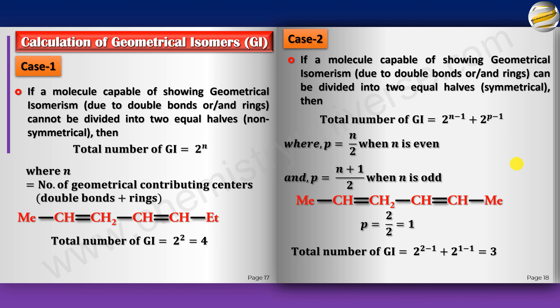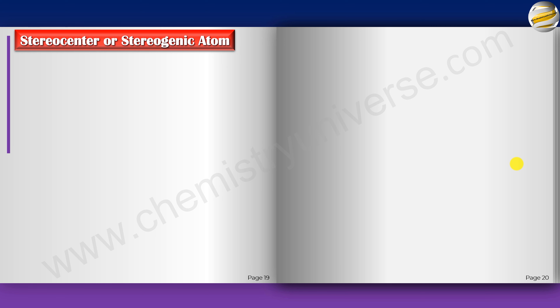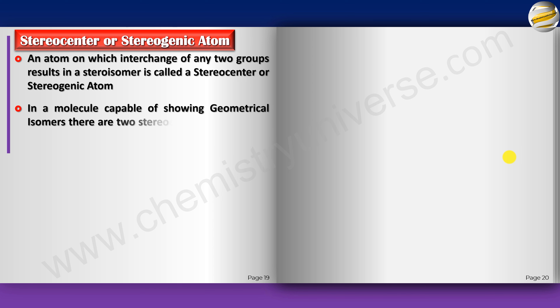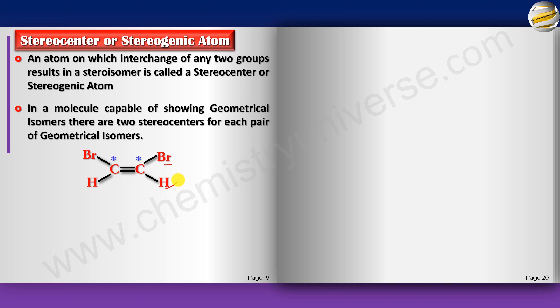An atom on which interchange of any two groups results in a stereoisomer is called a stereocenter or stereogenic center. In a molecule capable of showing geometric isomerism, there are two stereocenters for each pair of geometric isomers — one on each carbon of the double bond. Changing the two groups on either carbon of the C=C converts cis to trans (or vice versa), confirming both carbons are stereocenters.